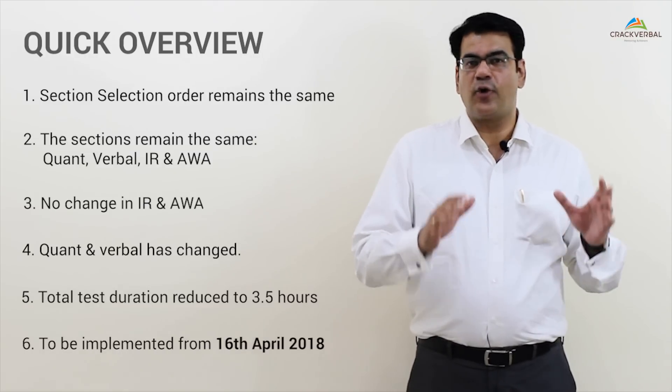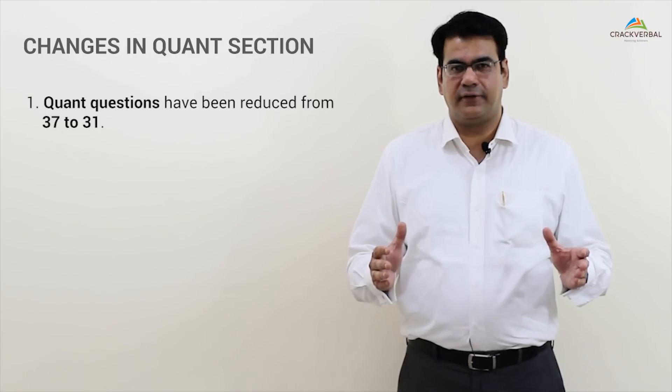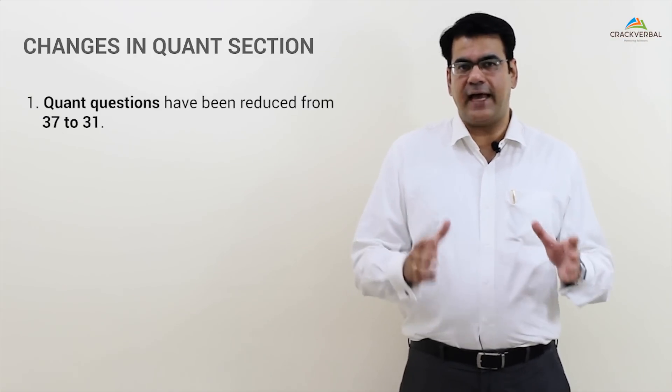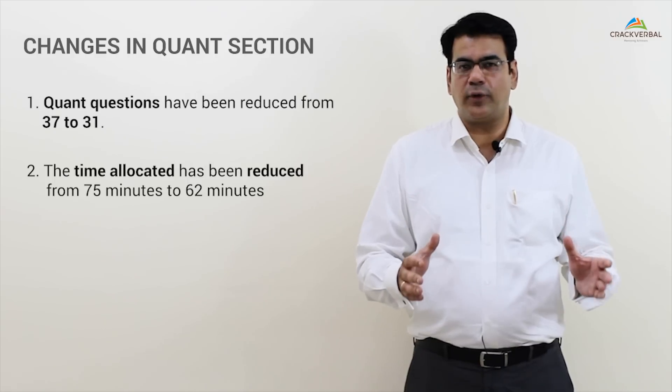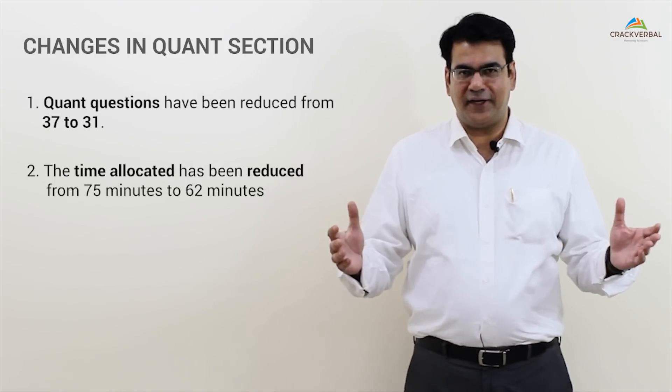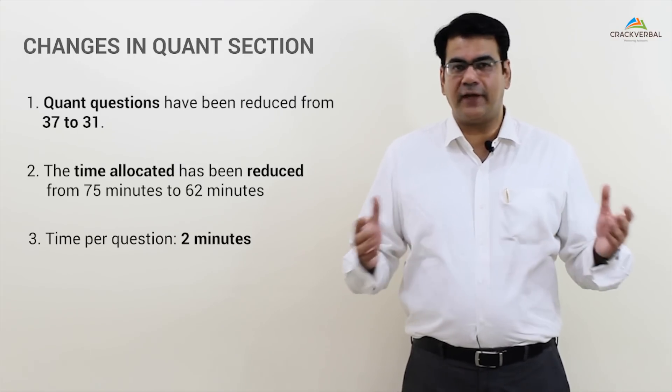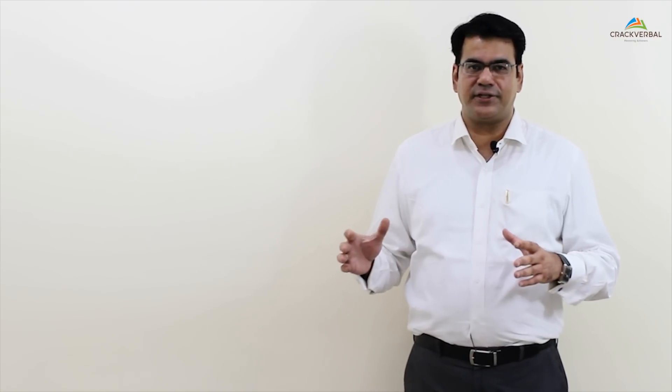Firstly, Quant has been reduced to 31 questions. If you know the earlier format of the GMAT, we had 37 questions to answer in 75 minutes. Now we have 31 questions and you have 62 minutes. The math is very easy: you have 2 minutes per question. Is that a good thing? We'll look more into the timing strategy.